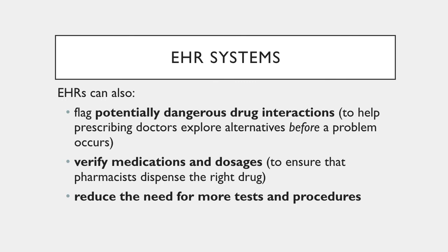For example, when a patient goes to see a specialist, the specialist may ask when the patient last had a blood test and what tests were taken. Patients often don't know this information, so without those details the specialist has to order new tests — sometimes duplicate tests — wasting time and money. With access to the EHR system, the physician can not only know what tests were taken, but what the accurate results were.